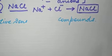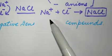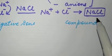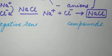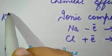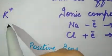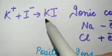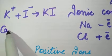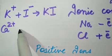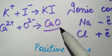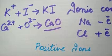An ionic compound is formed by the combination of positively charged ions and negatively charged ions. Metals have extra electrons so they give them to non-metals and form ionic compounds. For example, potassium also has an extra electron — it forms a potassium ion and combines with iodine to form potassium iodide (KI). Similarly, calcium loses two electrons and oxygen gains two electrons to form calcium oxide (CaO).